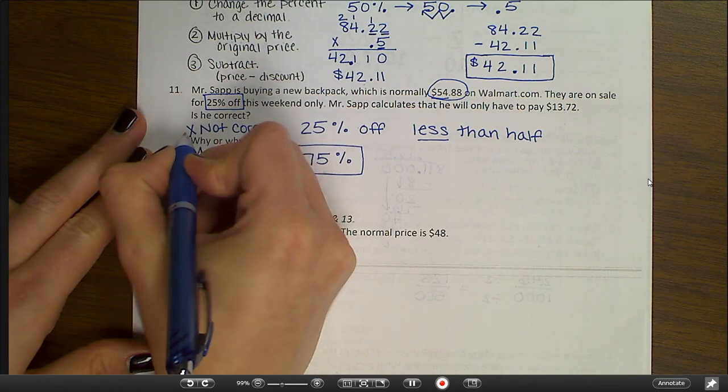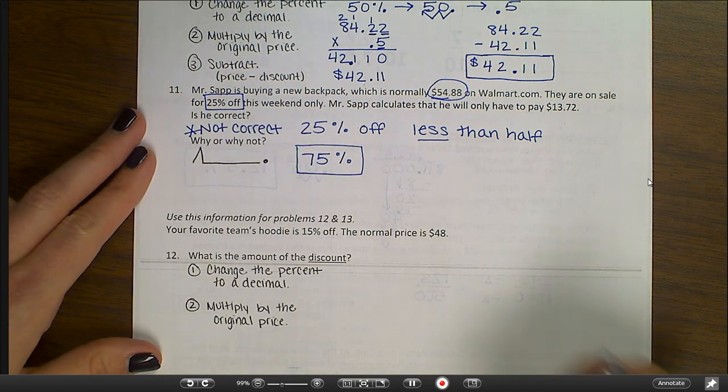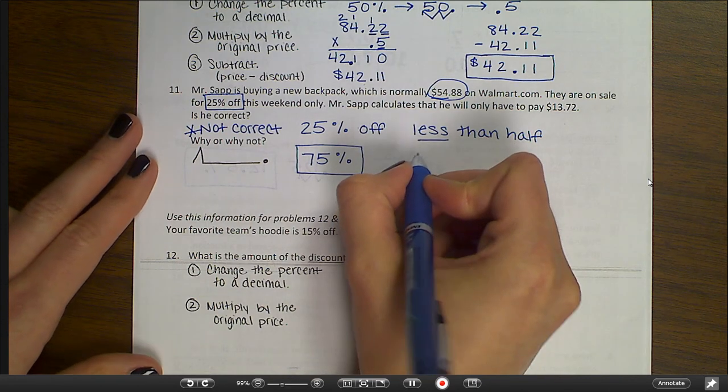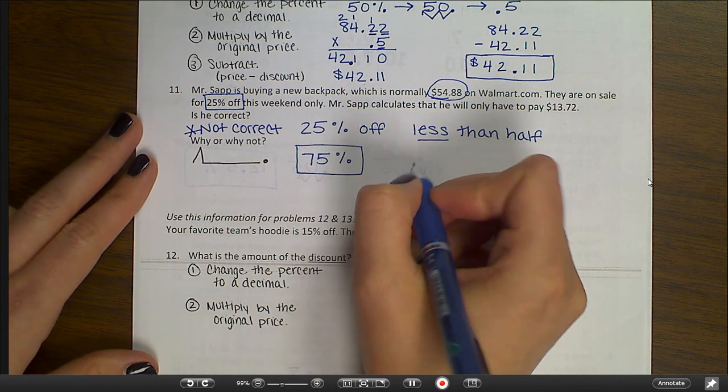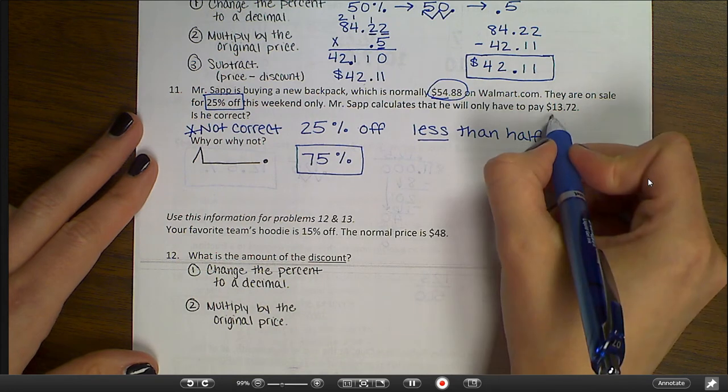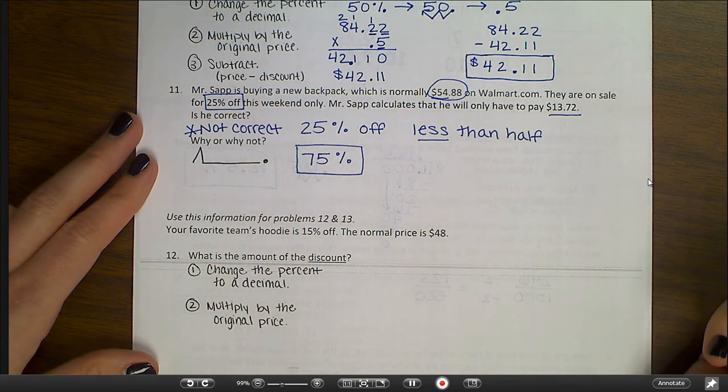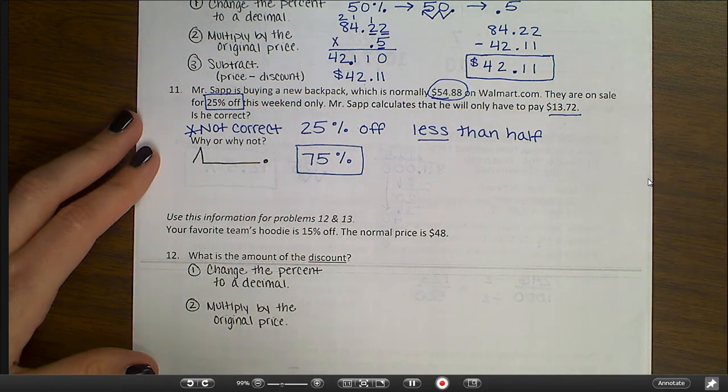And so I would say he is not correct. But then I need to be able to explain that. So if I have $54.88, $13.72 is actually the amount that I'm saving. That's the 25% off. He's going to be paying the other amount.